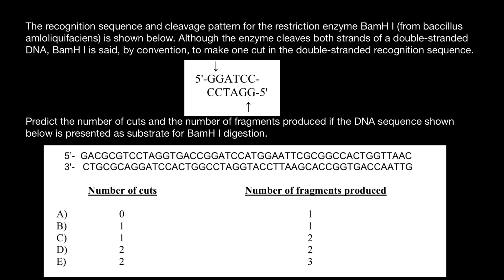Hello and welcome to Nikolai's genetics lessons. Today's problem involves the recognition sequence and cleavage pattern for the restriction enzyme BAMH1. Although the enzyme cleaves both strands of the double-stranded DNA, BAMH1 is said by convention to make one cut in the double-stranded recognition sequence. We need to predict the number of cuts and the number of fragments produced if the DNA sequence shown below is presented as substrate for BAMH1 digestion.